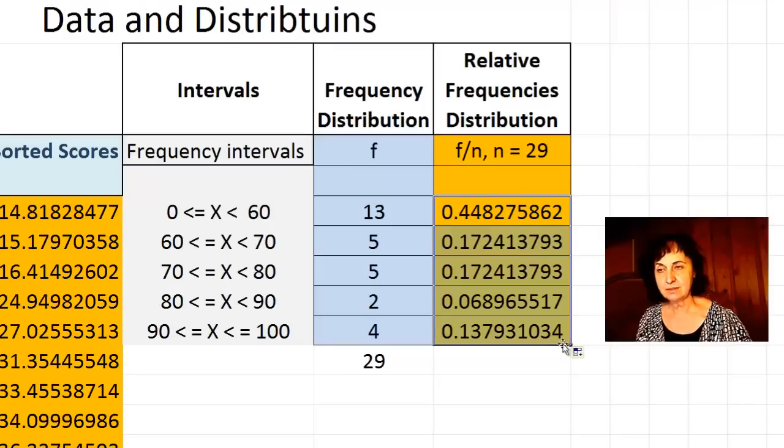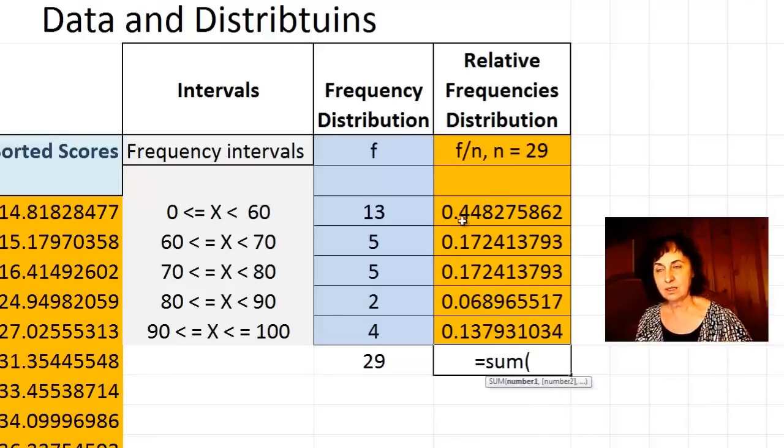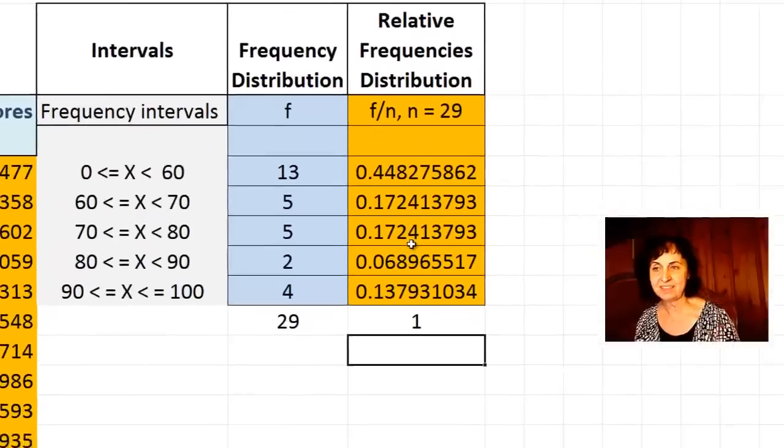These are the relative frequencies in each interval. What is the sum of relative frequencies? The sum of relative frequencies is always 1.